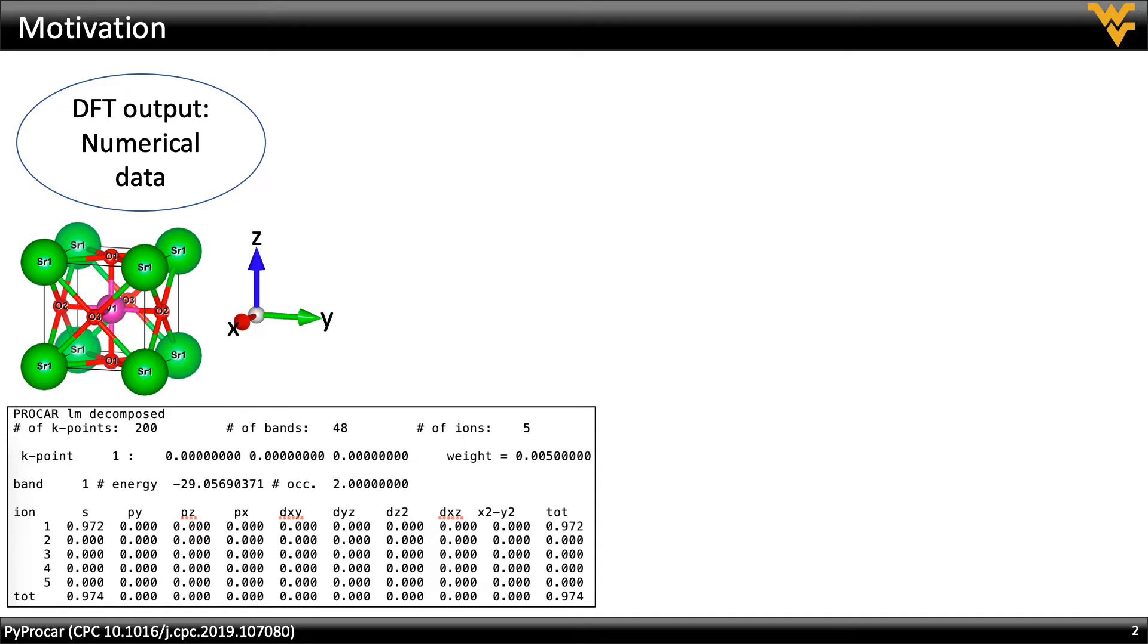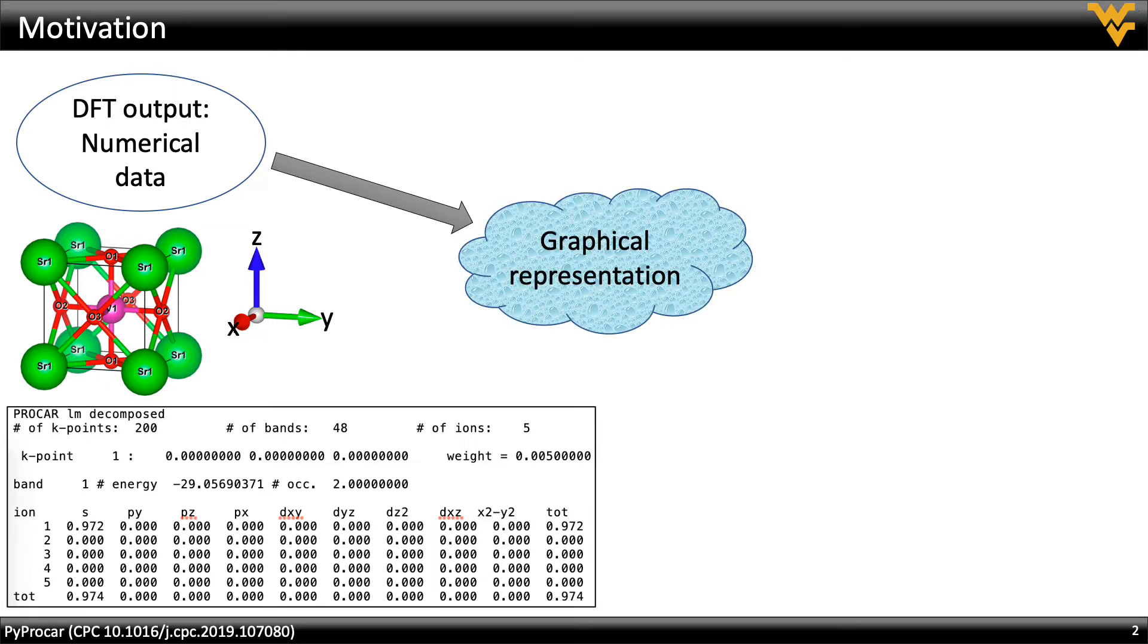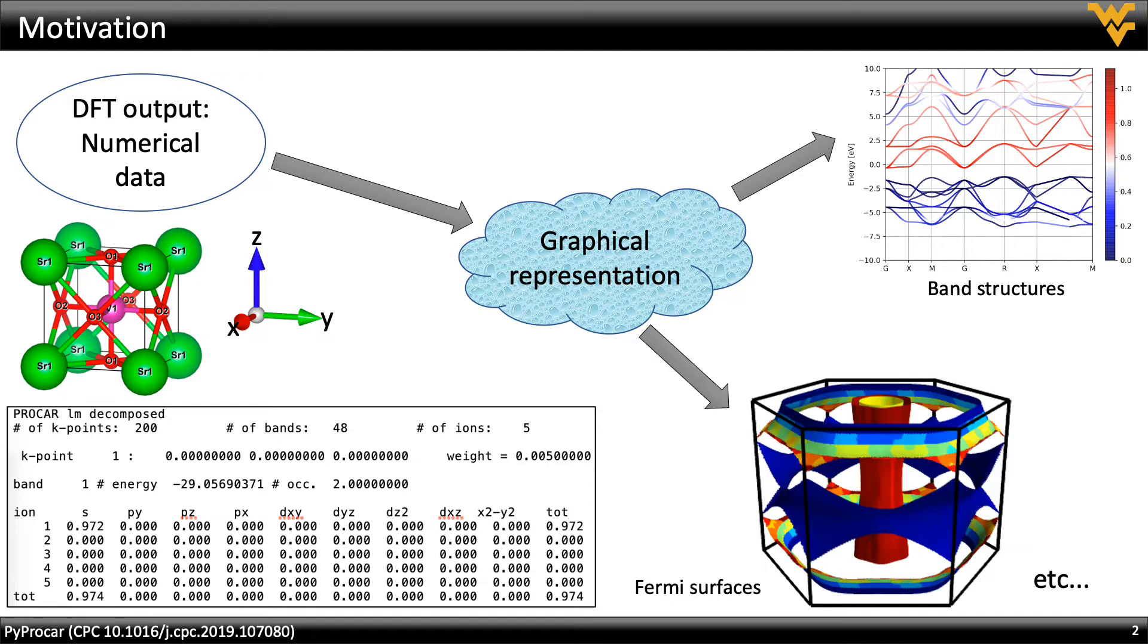Generally, the results from a density functional theory calculation is in a numerical form. The idea behind PyProCar is to take those numbers and convert them into a more comprehensible graphical representation such as a band structure or a Fermi surface using very simple single line commands which will be shown throughout this presentation.